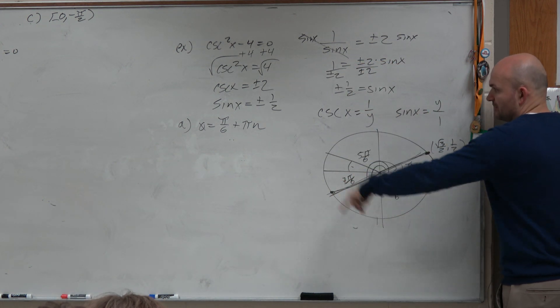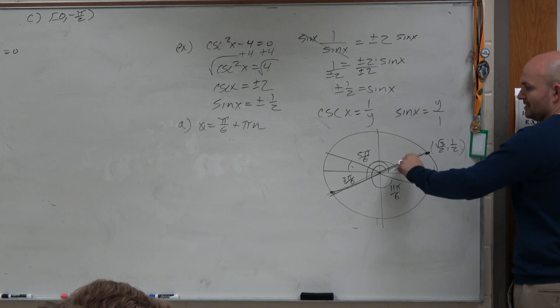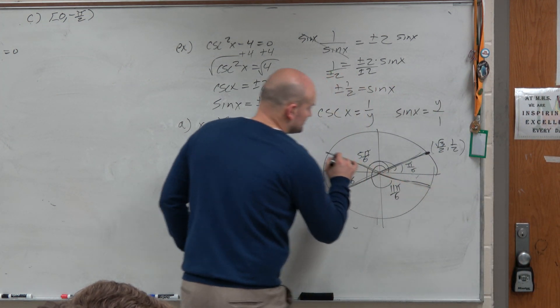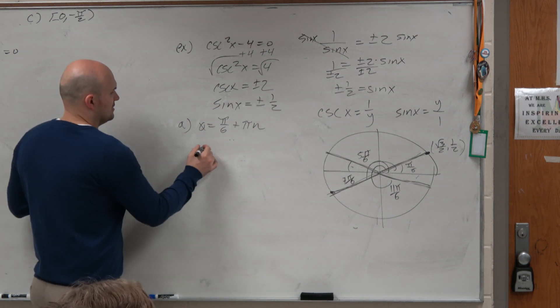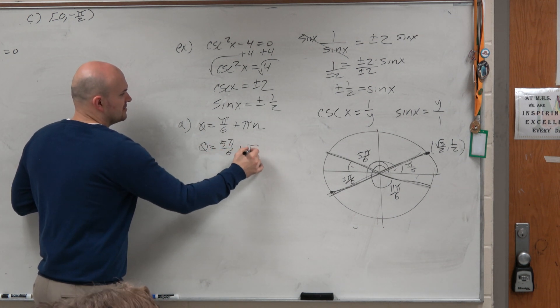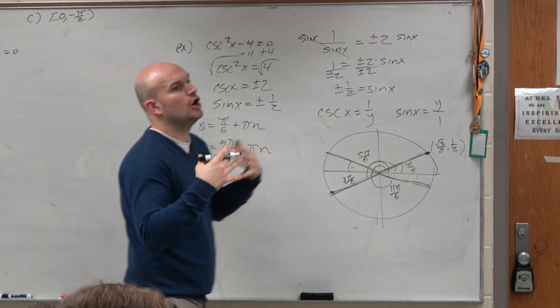And then you notice that these two have a relationship as well. So theta equals 5 pi over 6 plus pi n. And that is all of the solutions.